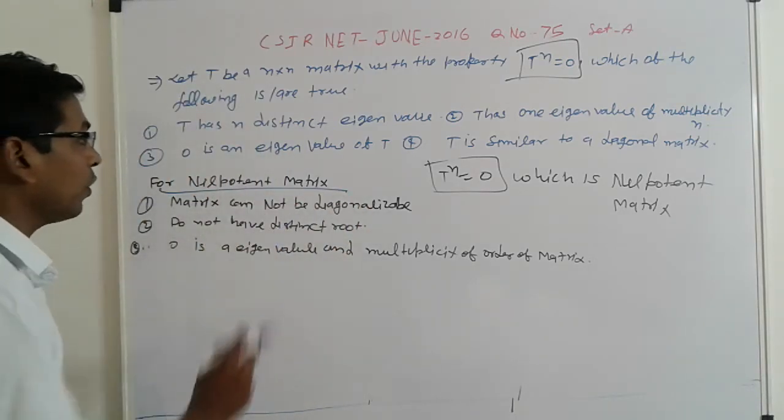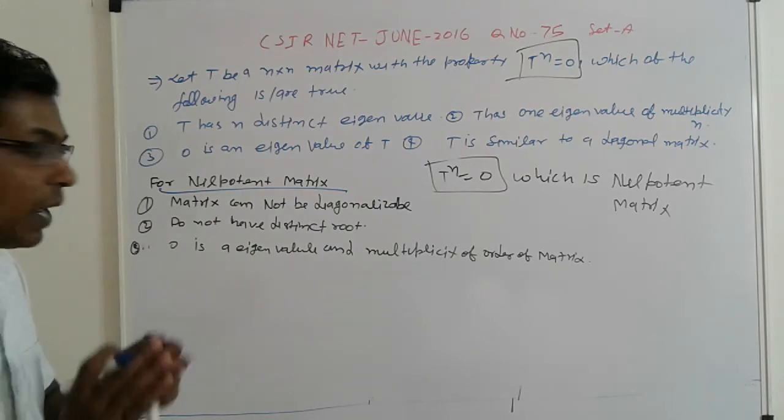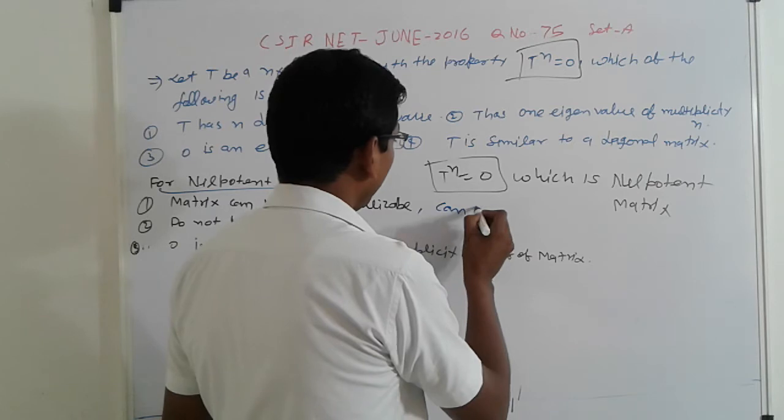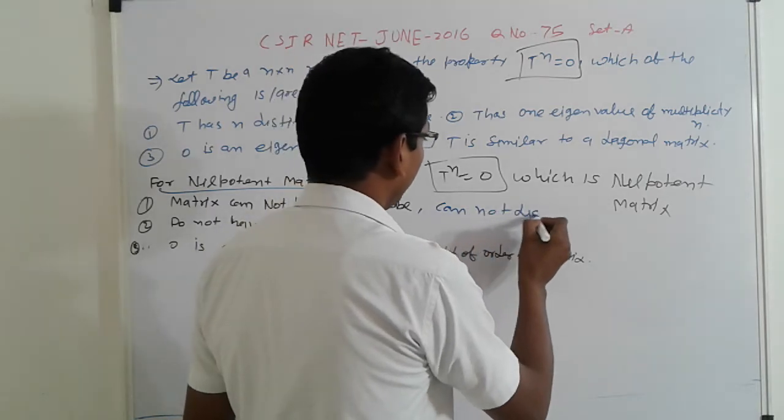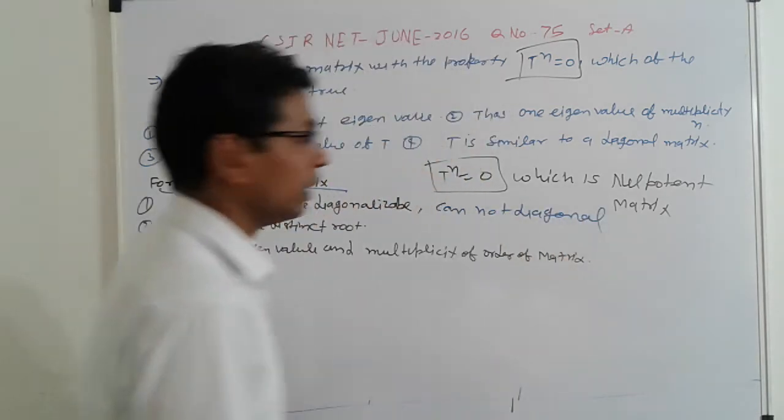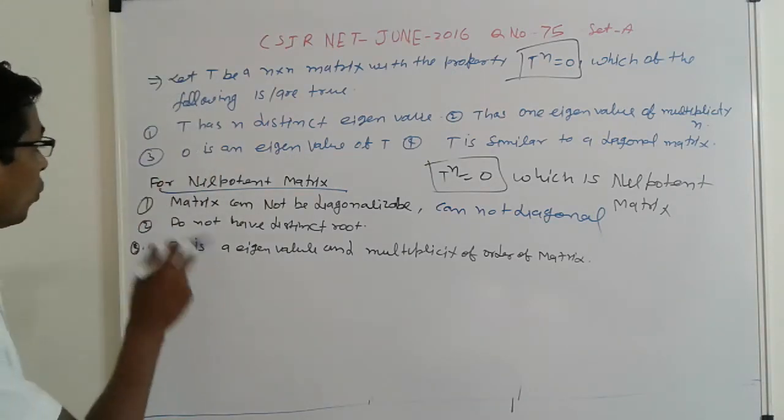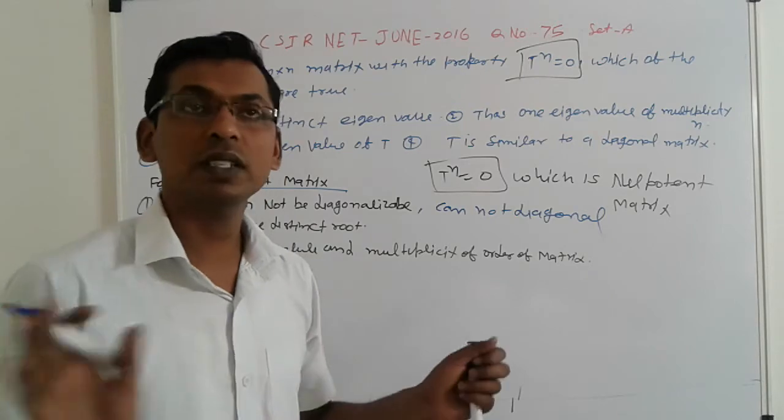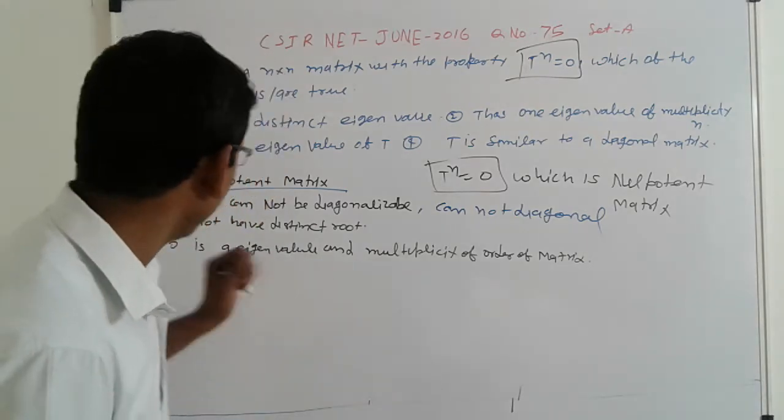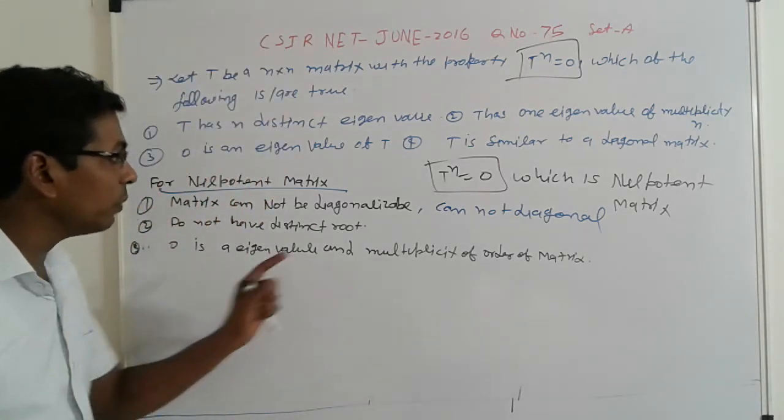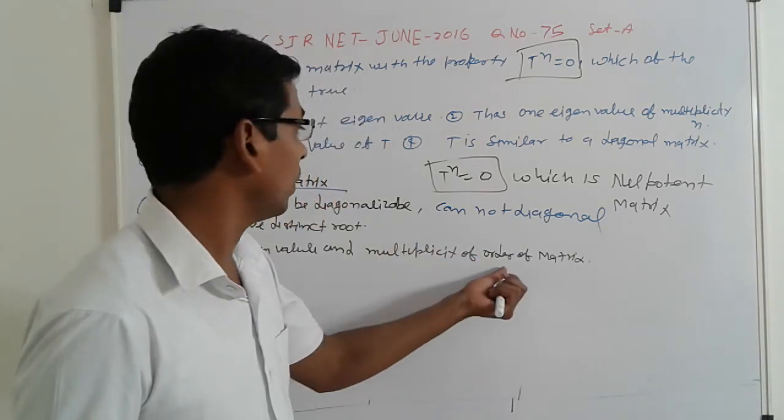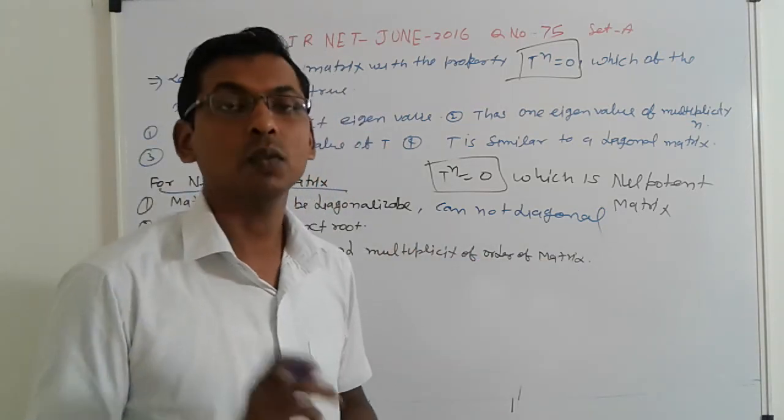Come to the point friends, which is the properties. First, for nilpotent matrix, matrix cannot be diagonalizable. Matrix does not have distinct roots. And 0 is eigenvalue and multiplicity of order of matrix.